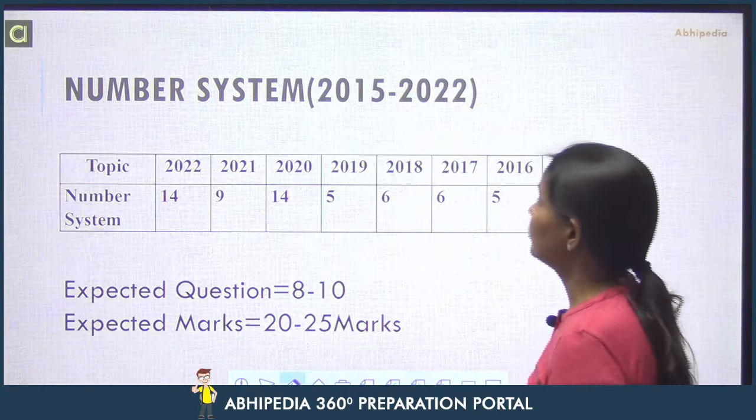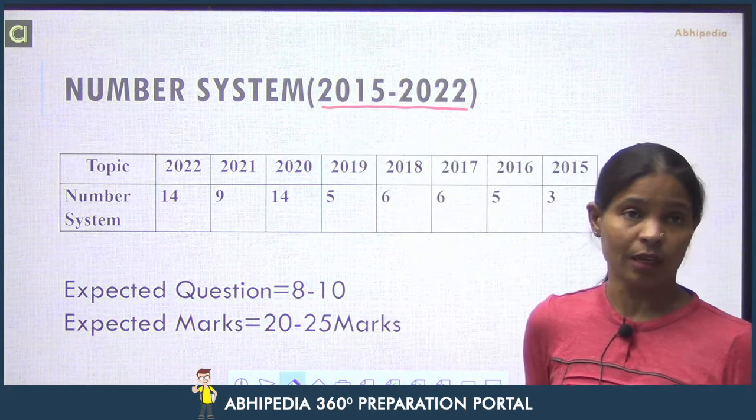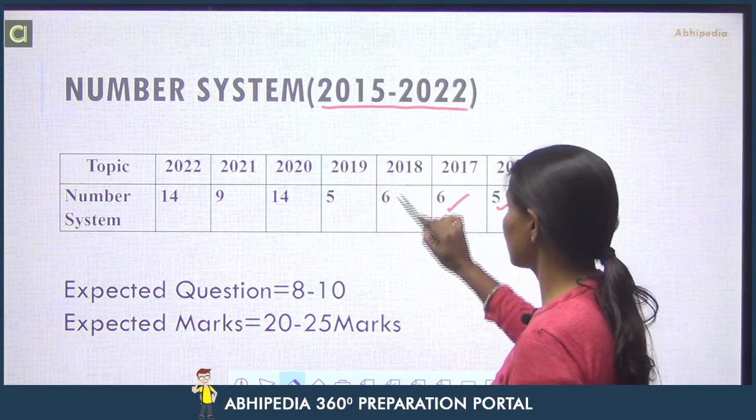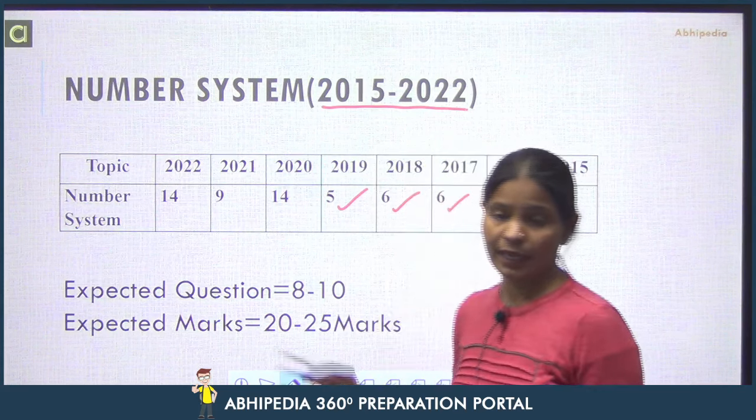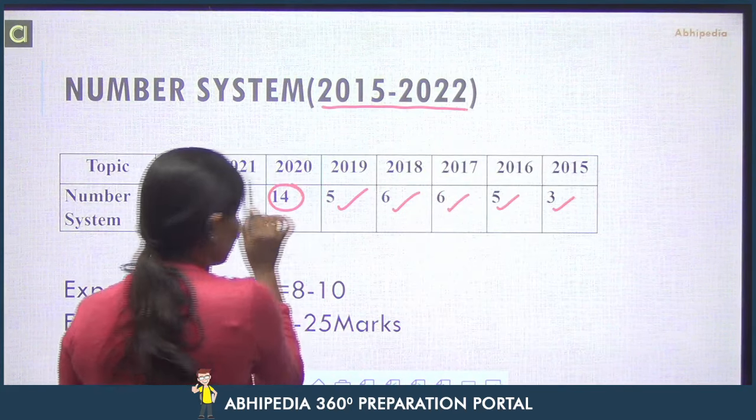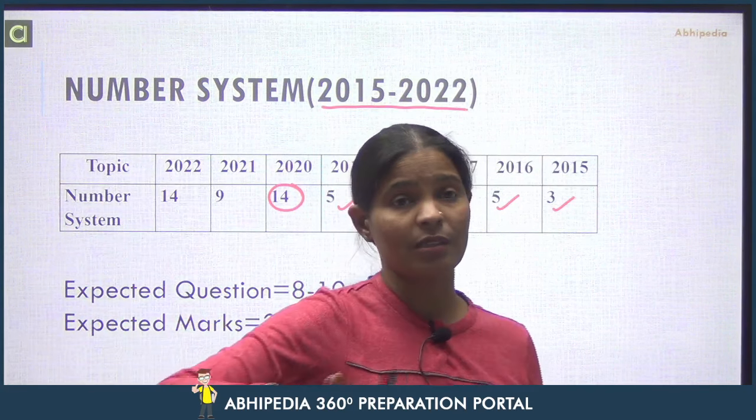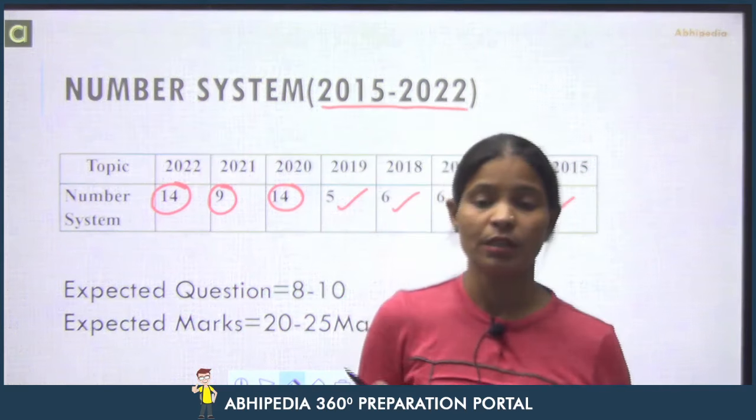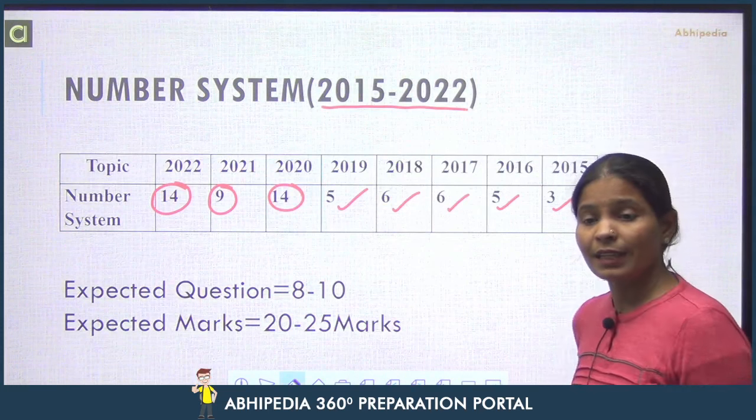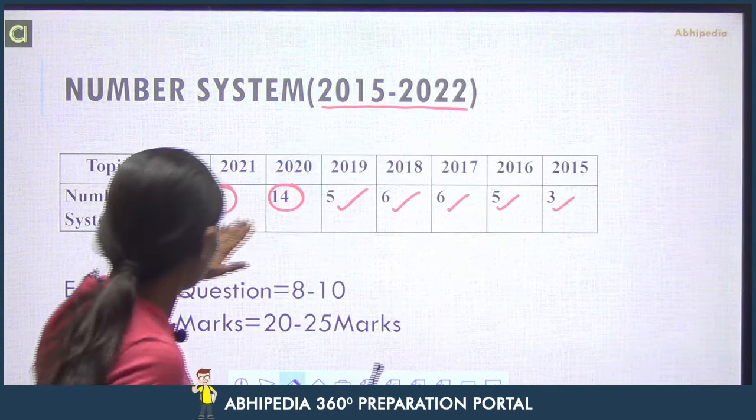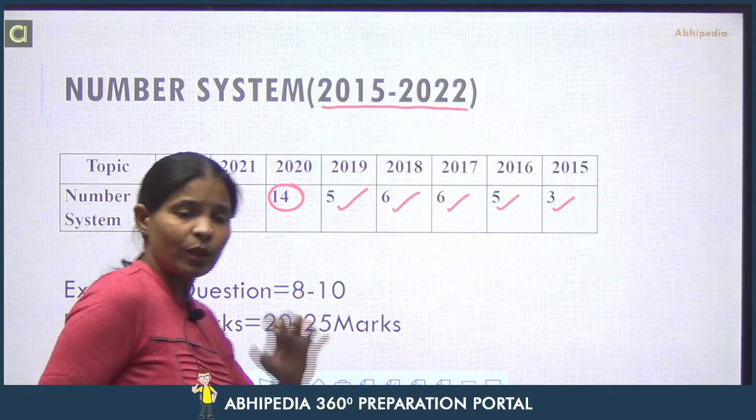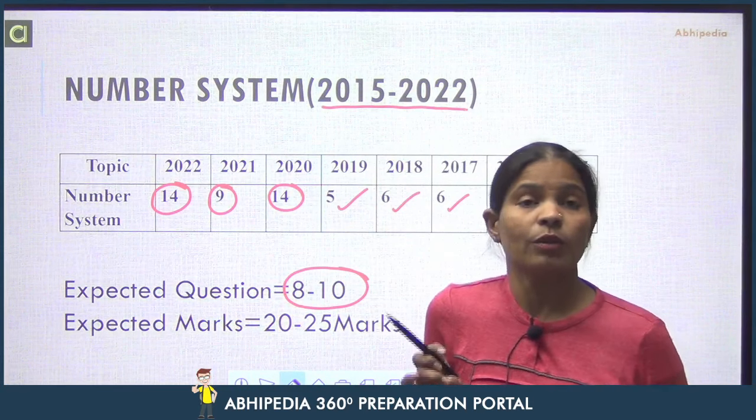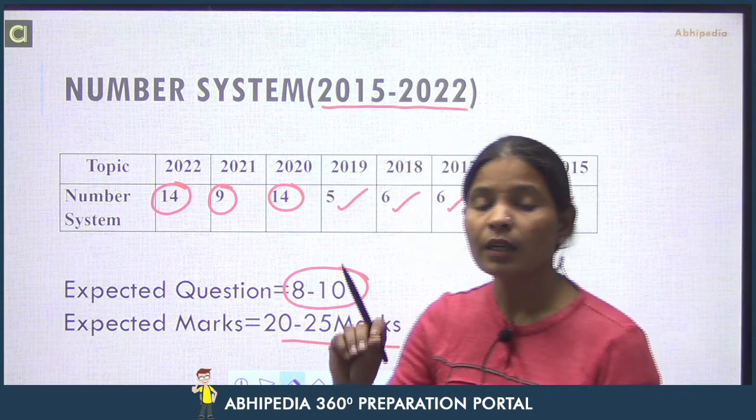Why start with Number System? Because it's very important from exam point of view. If we look at analysis from 2015 to 2022: 2015 had 3 questions, 2016 had 5, 2017 had 6, 2018 had 6, 2019 had 5 questions. After that, 2020 had 14 questions from Number System. UPSC suddenly changed the pattern with more questions coming from Number System. 2021 had 9 questions, 2022 had 14 questions.